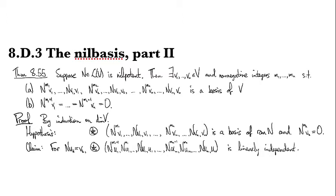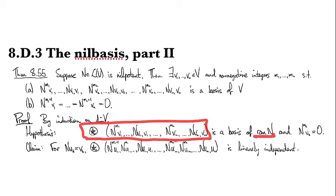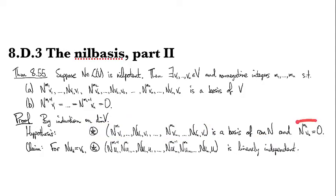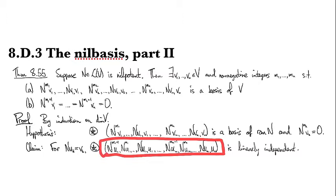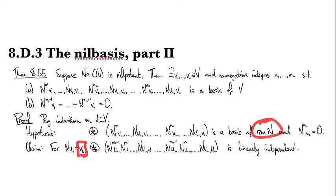Our inductive hypothesis is that we have a basis called star-v for the range of N, and these are optimal exponents, so if we go one more N, we kill everything in sight. Now we're going to take a new basis obtained by backing these things up: each vk is in the range of N, so we can find a uk whose image is vk — that's what we'll take to be our star-u basis.